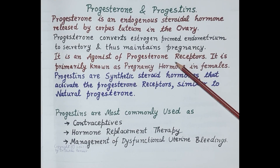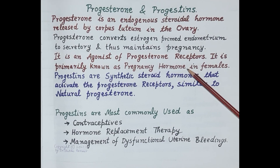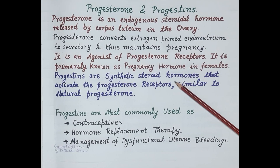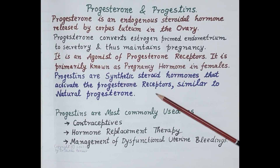Progesterone is an agonist of progesterone receptors and is primarily known as the pregnancy hormone in females. Progesterone is rapidly metabolized in the liver, thus it is inactive orally, and therefore synthetic progesterones have been developed. These synthetic progesterones are termed progestins — synthetic steroidal hormones that activate progesterone receptors similar to natural progesterone.